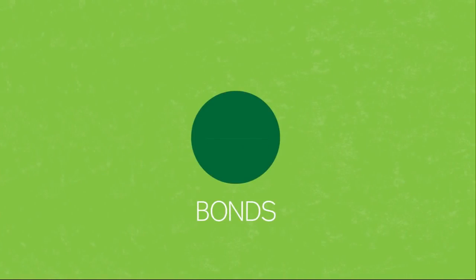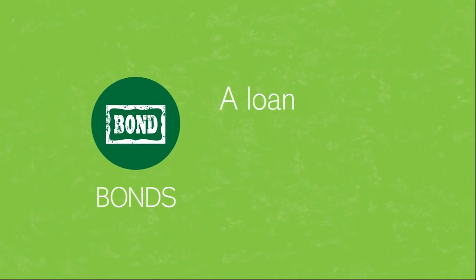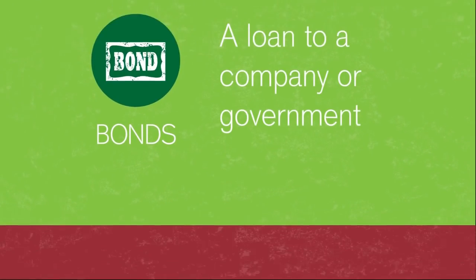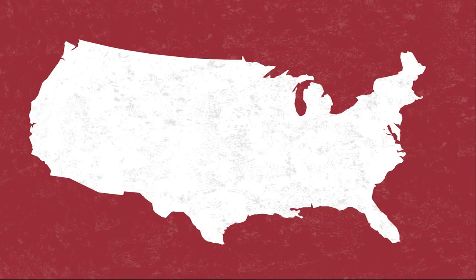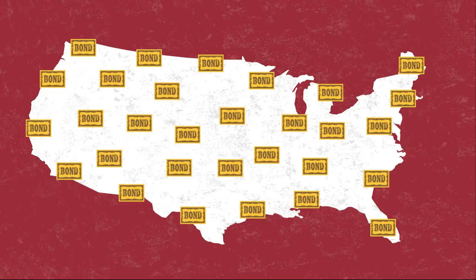Next up, bonds. Bonds are just a loan to a company or government. They borrow by selling a bond, which is simply a promise to repay the buyer in a fixed number of years at a fixed interest rate. When you hear about the US government borrowing money, have you ever wondered who they borrow from? Chances are, it's you through the investments you make in bonds.